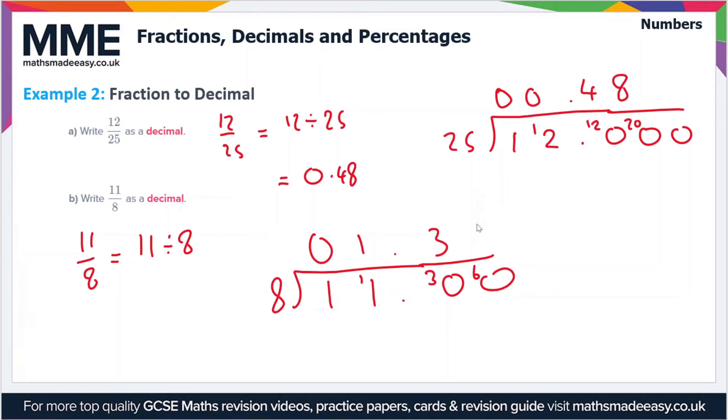So how many times does 8 go into 60 now? The answer is 7. So 7 times 8 is 56, so we put 7 here. So 60 minus 56 is 4, so we have a remainder of 4. Let's put some more zeros in. So now we have how many times does 8 go into 40? The answer is 5. We don't have any remainder here, so 11 divided by 8 is equal to 1.375.